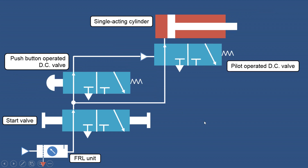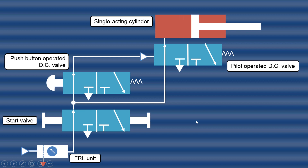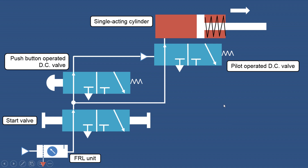When we operate the push button, the left envelope mode comes into action. Air from the FRL unit enters through the left envelope of the push button operated DCV into the pilot port of the pilot operated direction control valve, causing its left envelope mode to come into action. Once that is done, air from the main line enters through this path and is admitted on the cylinder side of the piston, causing the piston to move in the forward direction, compressing the spring — giving the forward stroke as shown.